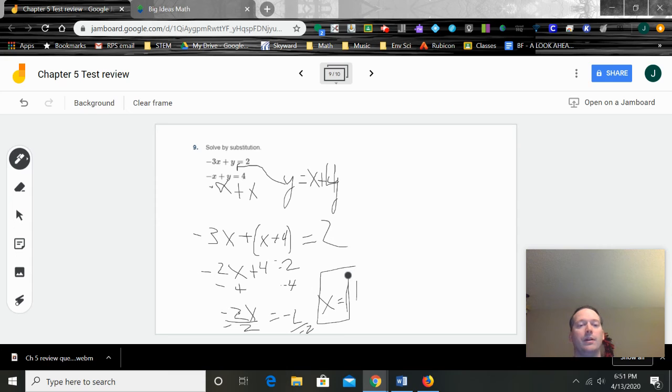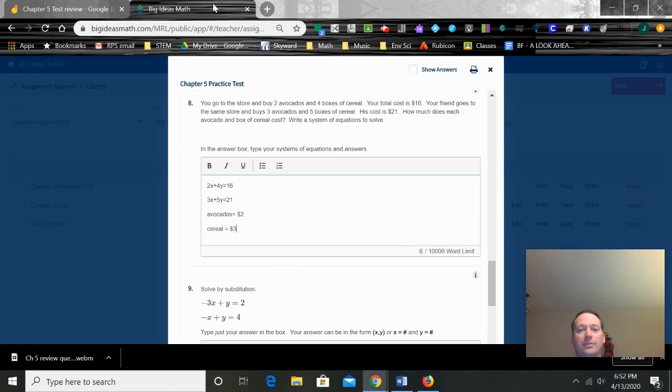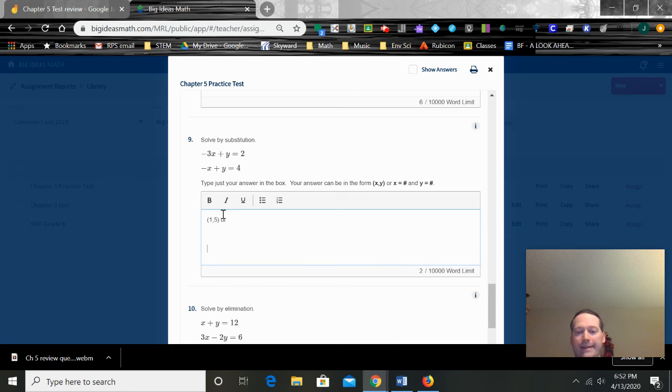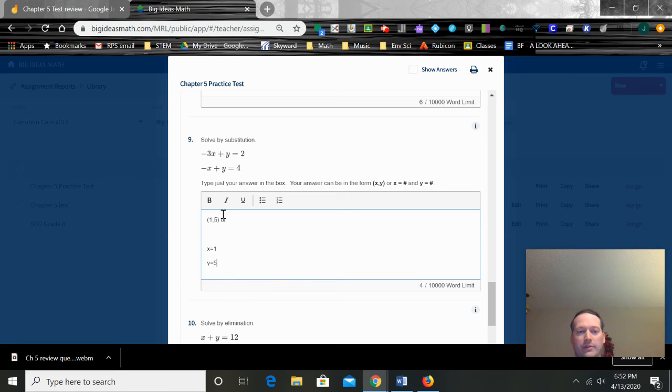Subtract four from both sides. Negative two x equals negative two. Divide by negative two. So x equals one. Now we're just going to take that, plug that into the second equation just because it's easier. So negative x. So negative of one plus y equals four. So negative one plus y is four. Add one to both sides. And y equals five. So let's just double check that real quick. Three times negative one is negative three. Negative three plus five is two. That works. Negative one plus five is four. So that works. So we have one and five. So to come over here, question nine, you can either put it in like this or you can put it like this: x equals one, y equals five.